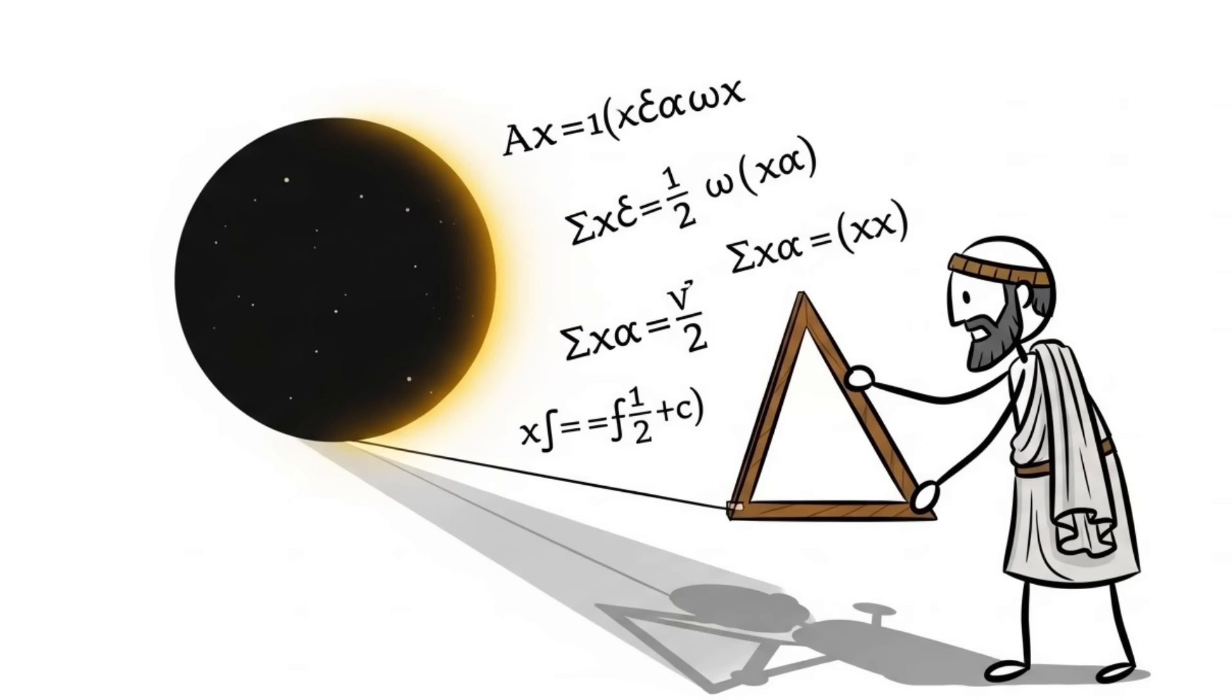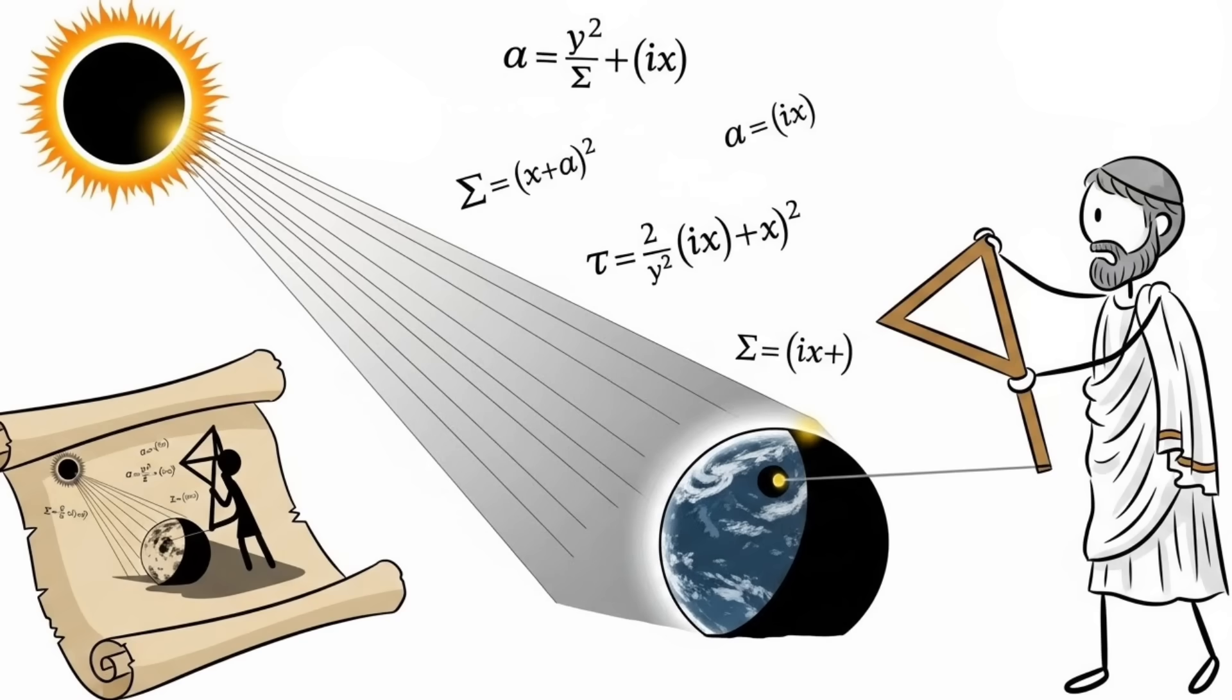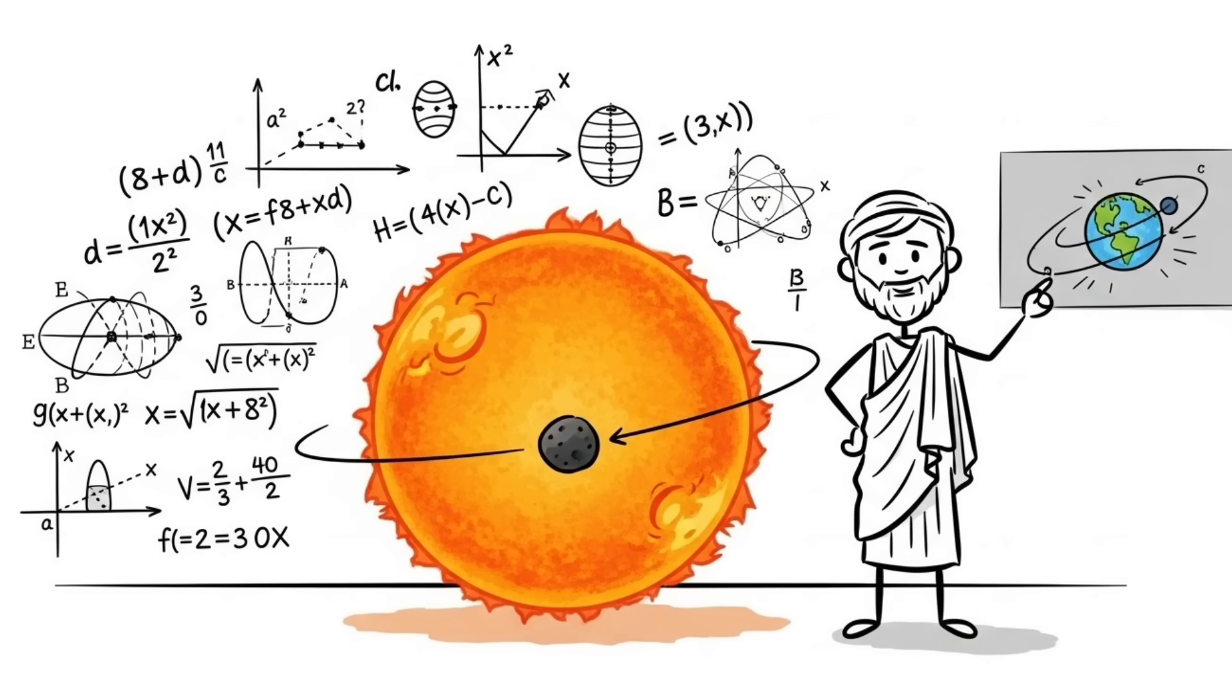Using simple math and watching moon eclipses, he calculated that the Sun was way bigger than Earth. So he came to the logical conclusion that it makes more sense that small thing orbits the big thing, not the other way around.